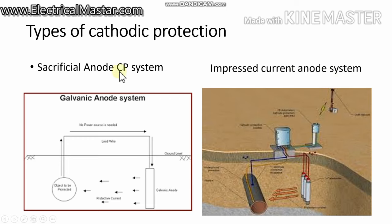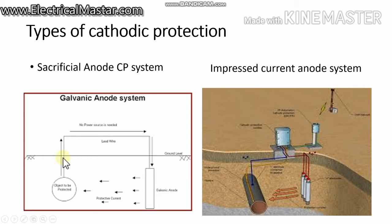The other method is the sacrificial anode system. In this method, there is no external power supply — the anode is simply placed near the pipeline, and the anode and the protected pipeline structure are directly connected through a cable wire. Due to the natural positive property of the anode, current flows from the anode (positive) to the pipeline (negative) and returns back, keeping the pipeline cathodic so it does not corrode. The anode itself gets corroded — it is sacrificed. This is an older method; the impressed current anode system is more efficient and more commonly used.